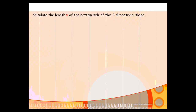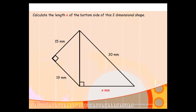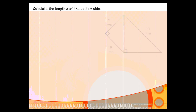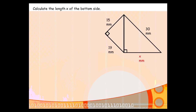If we look at an example here, let's say you're asked to find the length X of the bottom of this 2D shape. The shape we're looking at is basically two right-angled triangles stuck one to the other. You cannot answer this question with the information that you've got at the moment — you can't just launch into something that's going to give you the answer straight away.